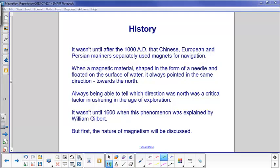It wasn't until after 1,000 AD, 1,000 years later, that Chinese, European, and Persian mariners separately used magnets for navigation. They all noticed that when a magnetic material, which was shaped in the form of a needle and floated on a surface of water, it would always point in the same direction, which is the north.